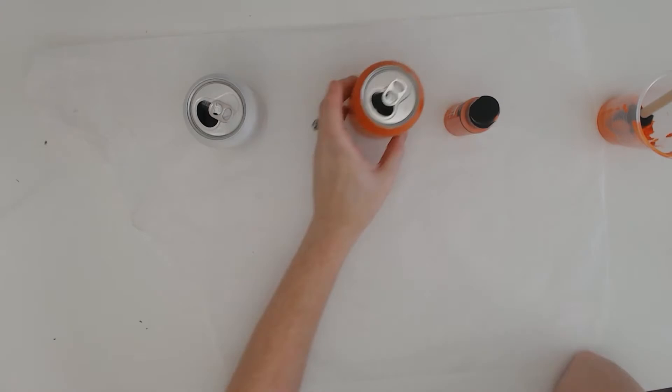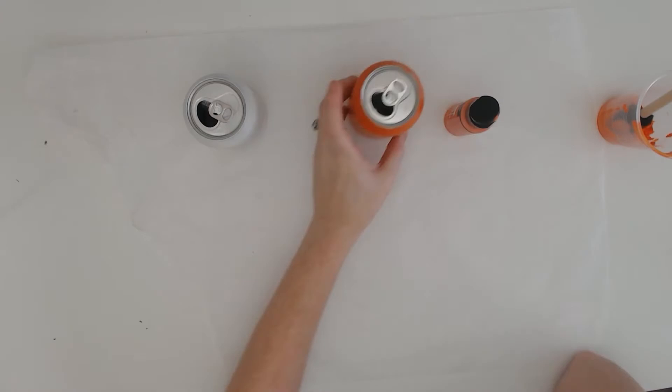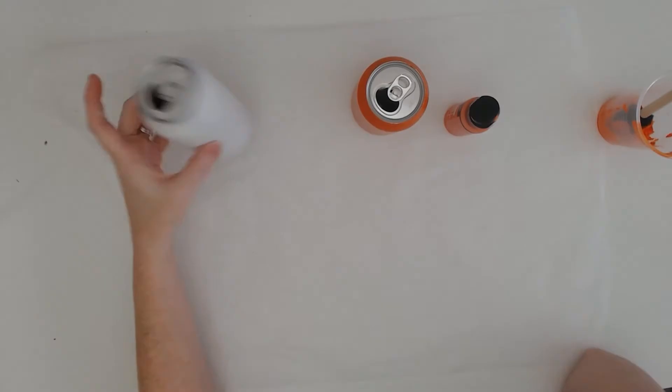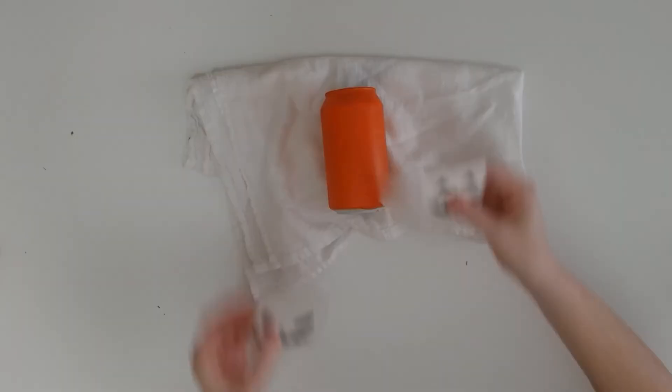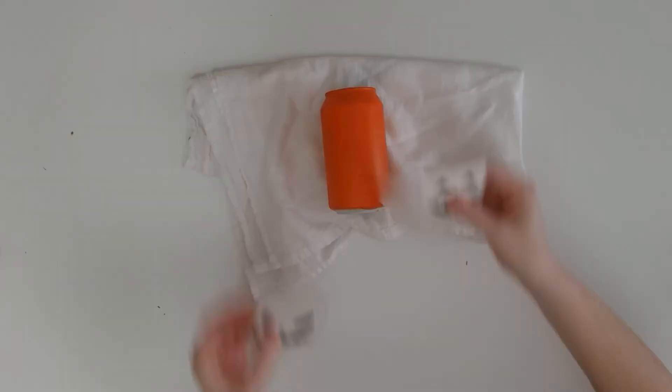If you have a primer, then go ahead and apply that first and then paint over it, and you're going to get much better coverage for the paint. Then like before, choose your favorite jack-o'-lantern face.